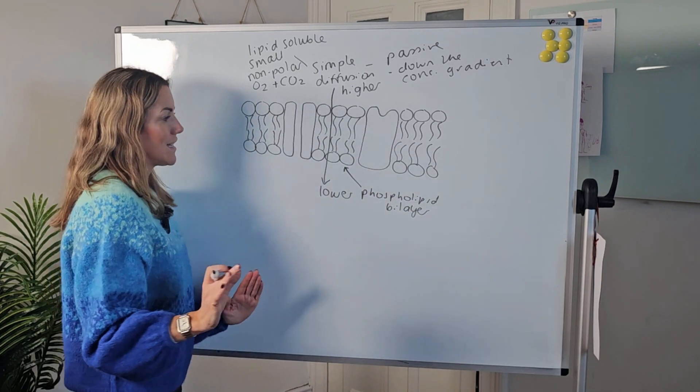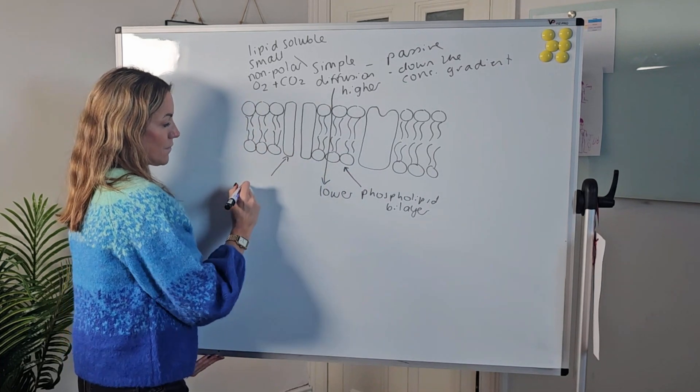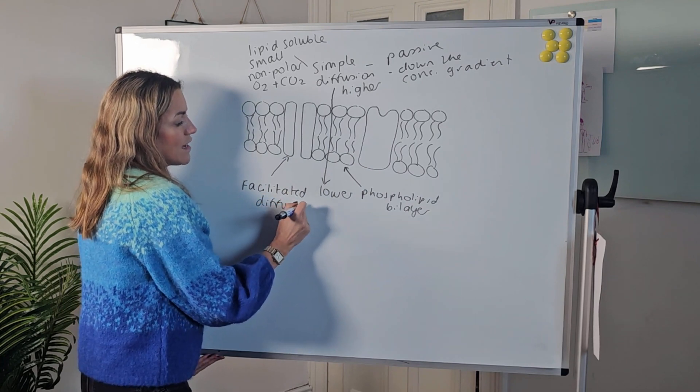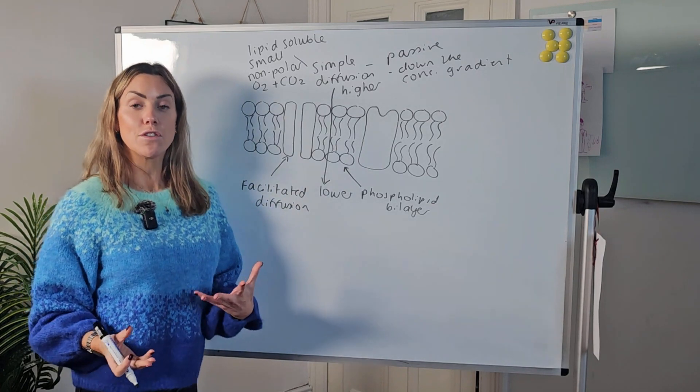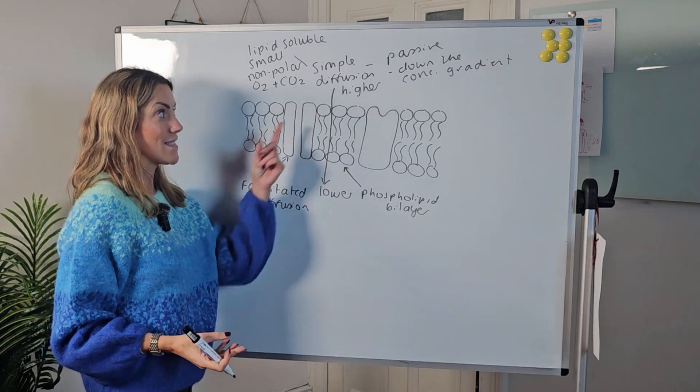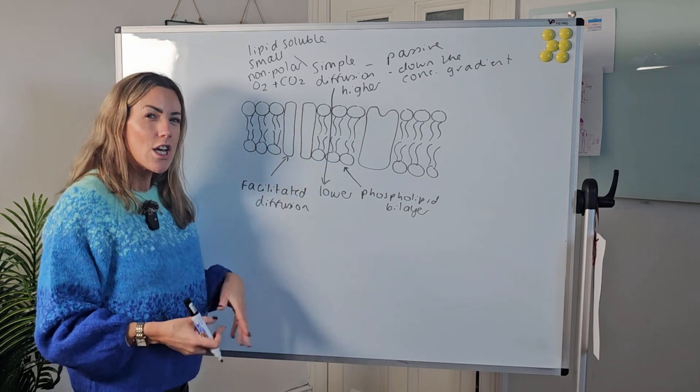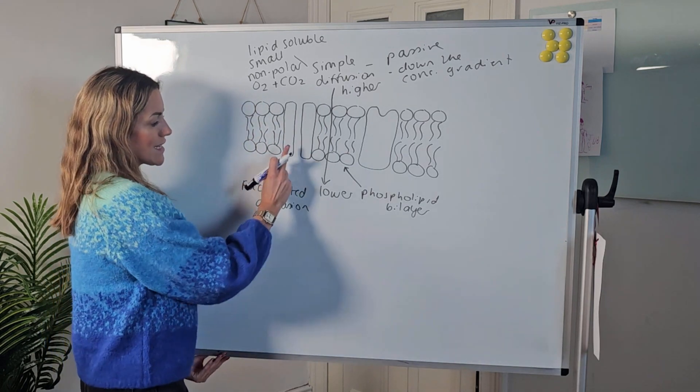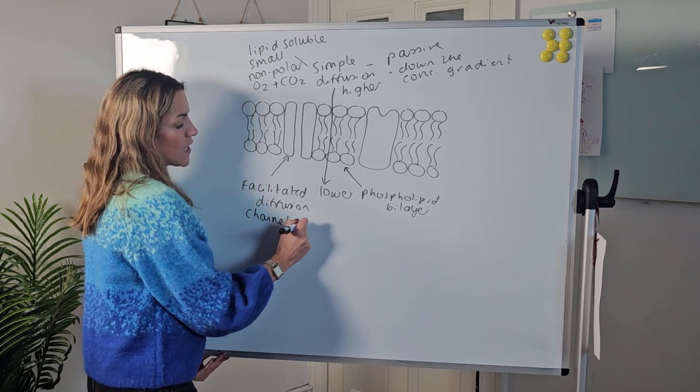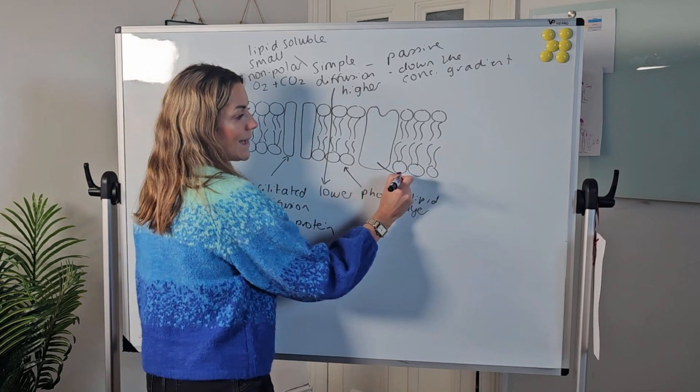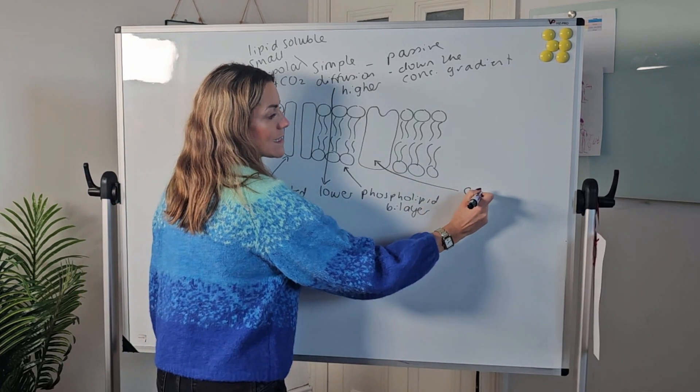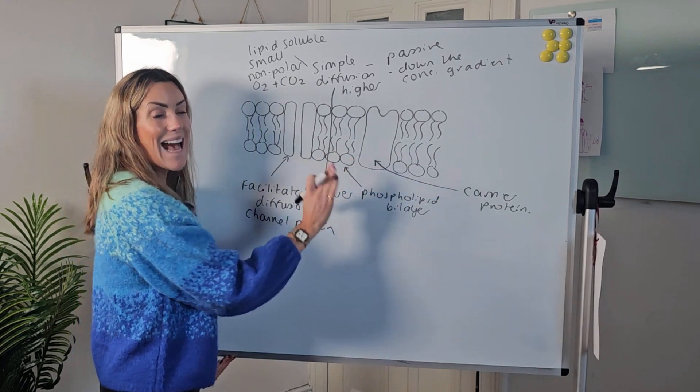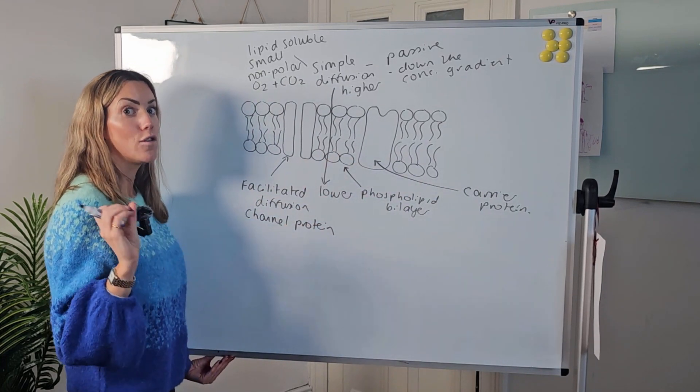Let's move on to facilitated diffusion. The name is kind of telling us - facilitated diffusion is a type of diffusion, so it has lots of similarities to simple diffusion, but it's facilitated, so it requires a little bit of help. Facilitated diffusion is going to use a channel protein or a carrier protein. Both channel proteins and carrier proteins can be used for facilitated diffusion.